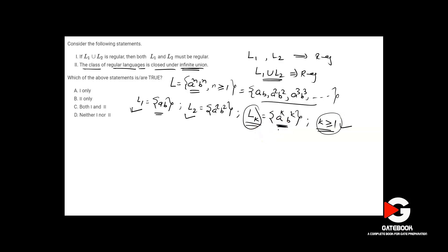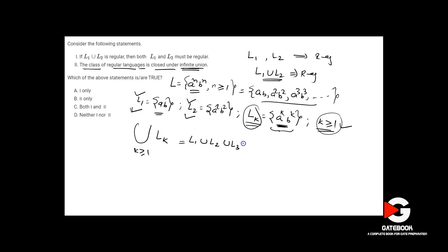Every Lk is regular — because every Lk is a finite language, containing only one string, and every finite language is regular. So for all k ≥ 1, each Lk is regular. Now take the union of all Lk: L1 union L2 union L3 union L4 and so on. This is an infinite union of regular languages.